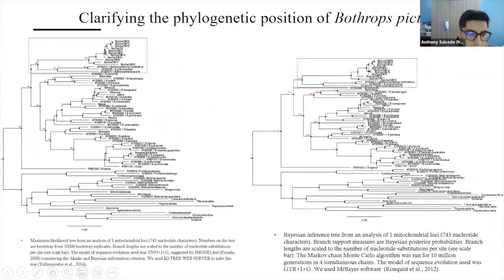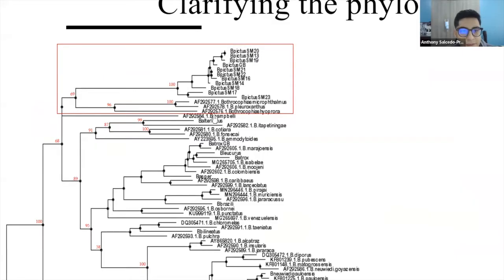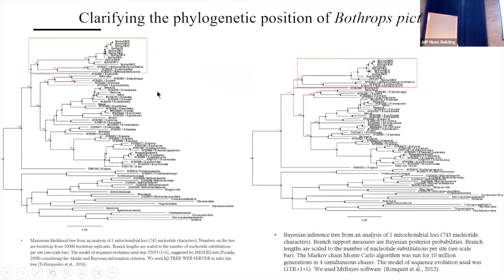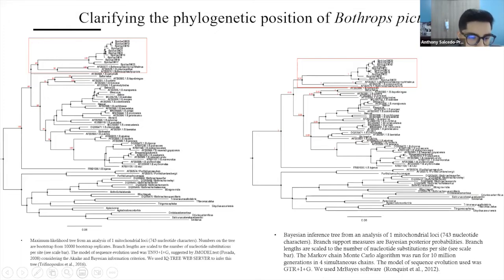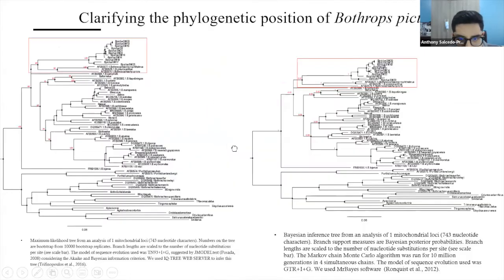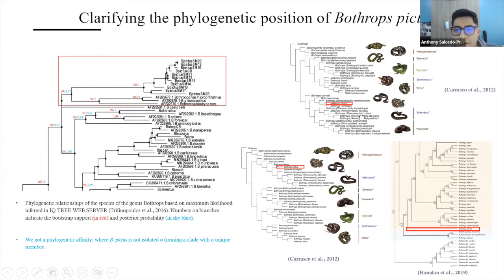Here are our results. On the left side you can see our maximum likelihood tree. As you can see, Bothrops pictus is closely related to Bothrocophias — so we got a phylogenetic affinity. We got the same result in the Bayesian inference tree. In comparison to other phylogenies by Carrasco and Hamdan, we obtained a phylogenetic affinity supported by 69% bootstrap values and 0.57 posterior probability.